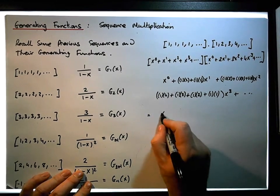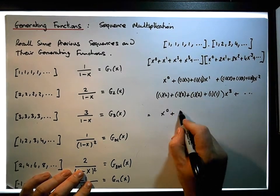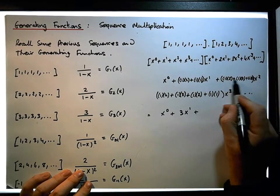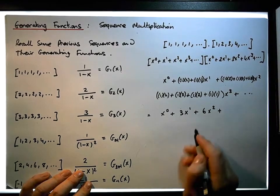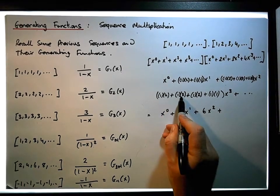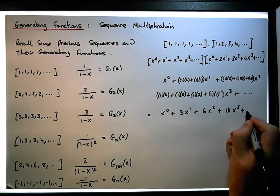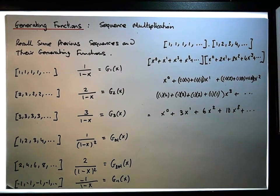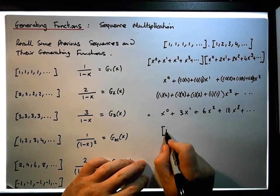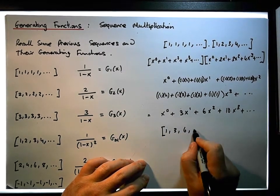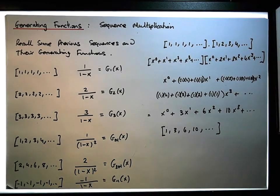What we end up with is a power series that looks like this: x⁰ plus — two plus one gives us three — three x¹ plus — three plus two is five, plus one gives six — six x² plus — four plus three is seven, plus two is nine, plus one is ten — ten x³ plus dot dot dot.